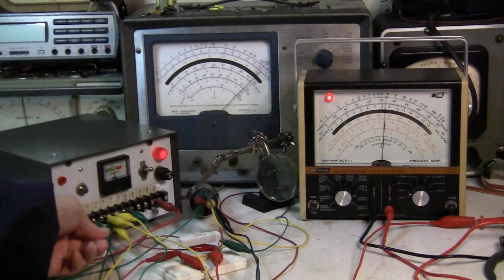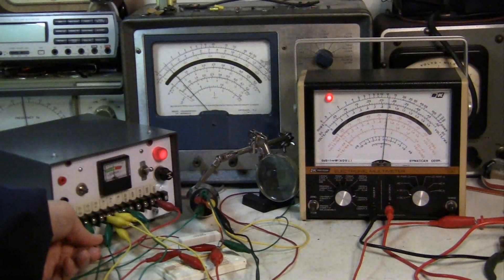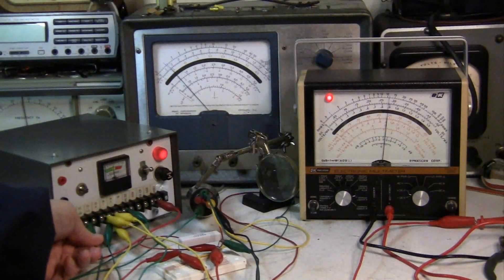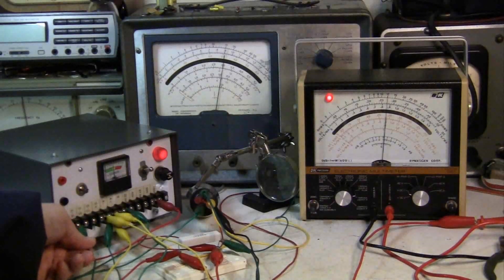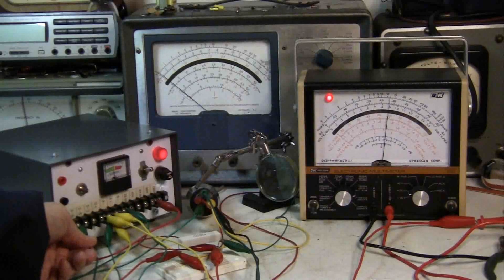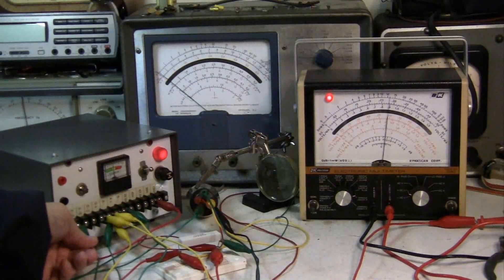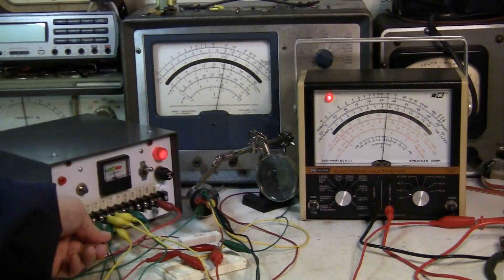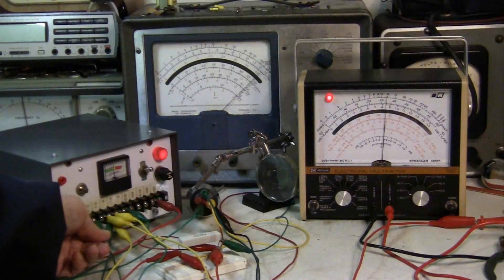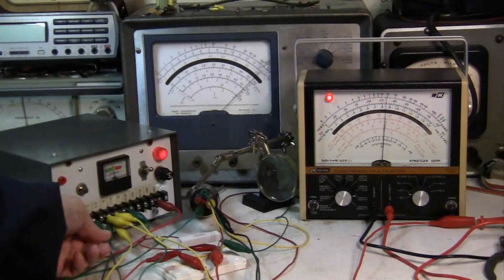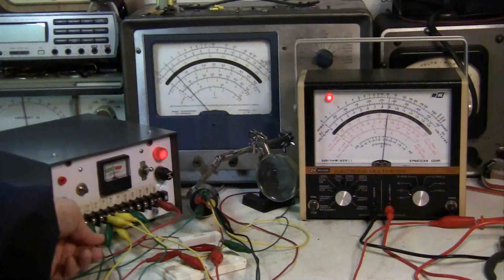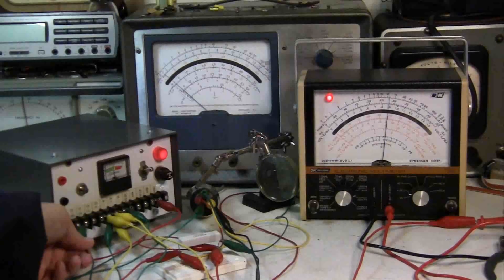And when I make it more negative, it turns off the tube even more. And when I make it even more negative, the tube is almost shut off. And that is minus 4.5 volts, minus 10, and minus 20.